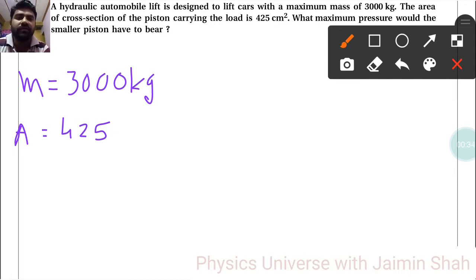So it is 425 times 10 to the minus 4 meter square. Now what maximum pressure would the smaller piston have to bear?